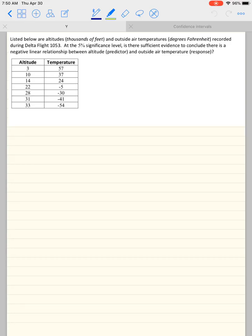Hey guys, welcome to the first video on linear regression. I'm just going to use this problem, but I'm actually not going to answer the question that they're asking here. Listed below are altitudes in thousands of feet and outside air temperatures in degrees Fahrenheit recorded during Delta flight 1053.